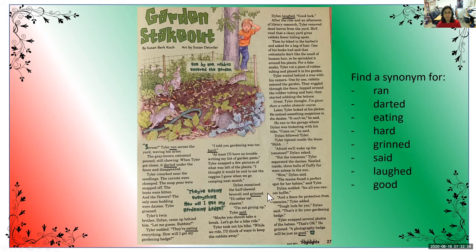Let's look at this one: 'Dylan examined the half-chewed broccoli and grinned.' Instead of saying grinned, what synonym could we substitute? Grinned kind of means smiled, so maybe we could say 'Dylan examined the half-chewed broccoli and smiled.' Those both mean the same thing, so they're synonyms.